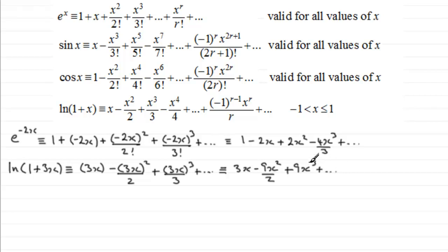Now if we're asked what is it valid for, then for something like this, instead of having x between minus 1 and less than or equal to 1, we're dealing with 3x that is greater than minus 1 but less than or equal to 1. So when we divide both sides by 3, we see that it's valid for x greater than minus 1 third but less than or equal to 1 third.